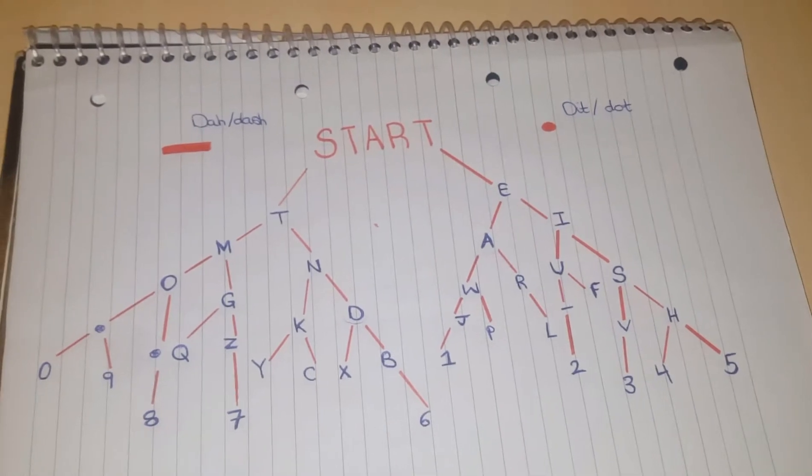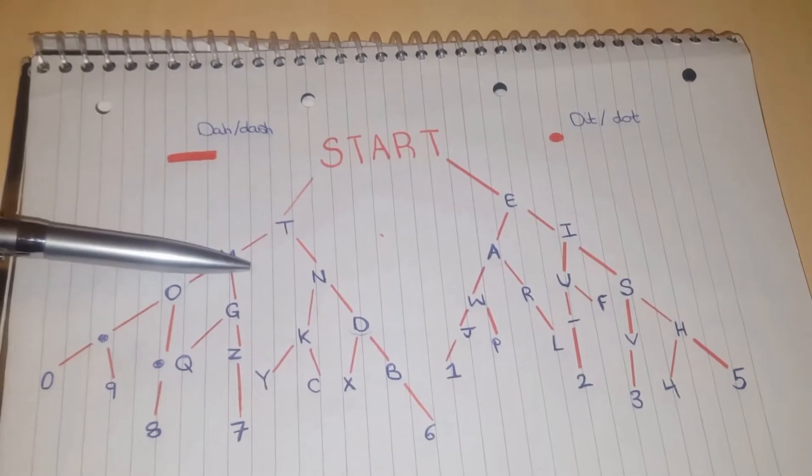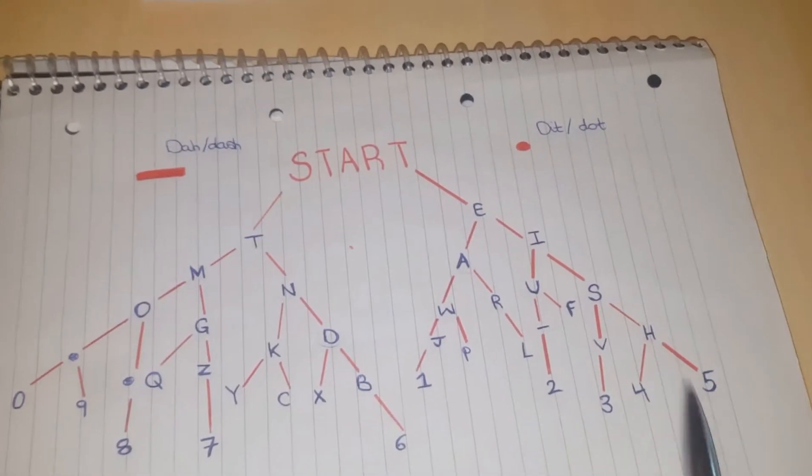So, you're thinking, why is it dash dash dot? Well, for each movement that you make, you change either from a dash to a dot on the left, or a dot to a dash on the right.